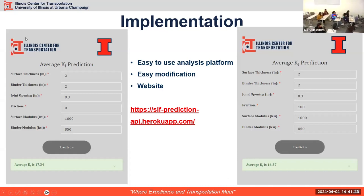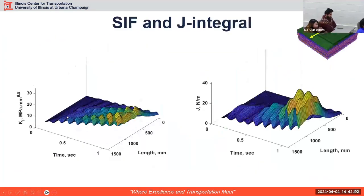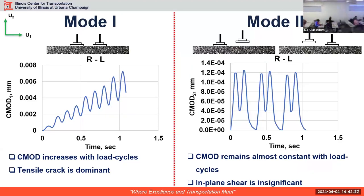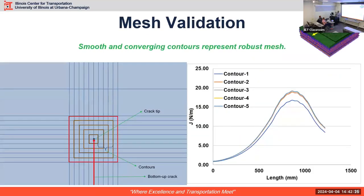Question about mesh convergence: can we randomly select mesh size without checking convergence? No — we did perform convergence analysis using standard Abaqus procedures. As you reduce element size, results converge but computation time increases, so you find the optimal value. For fracture analysis specifically, you perform a separate convergence check: you look at how smooth the J-integral curve is and how well values converge across the contours, with the mesh used here being the result of several iterations.